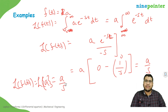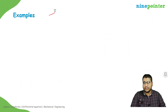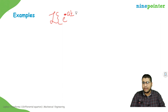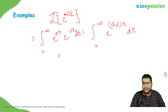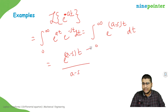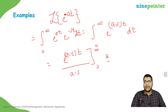Now let's look at another example: the Laplace transform of e to the at. This will be the integral from zero to infinity of e to the at times e to the minus st dt, which simplifies to the integral of e to the (a minus s)t dt. Integrating gives e to the (a minus s)t divided by (a minus s), evaluated from zero to infinity.